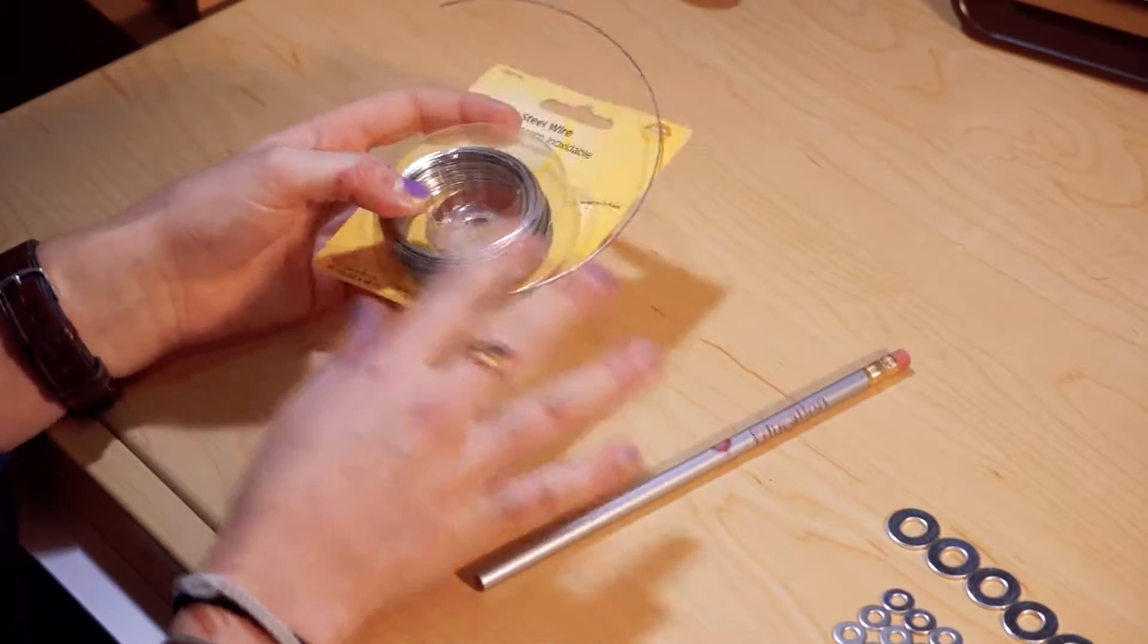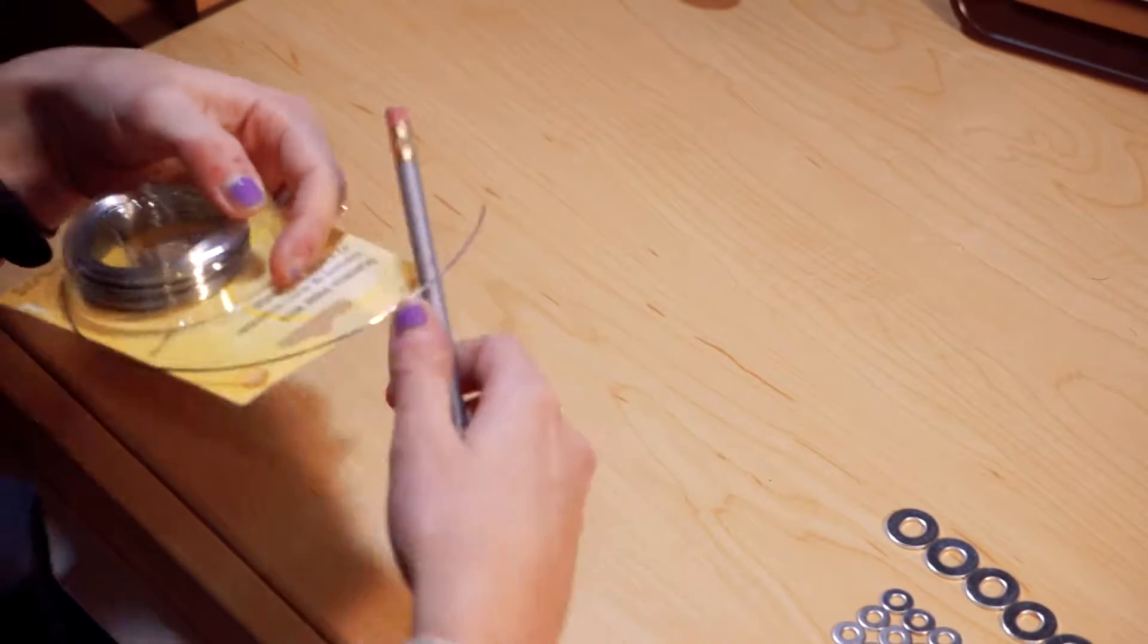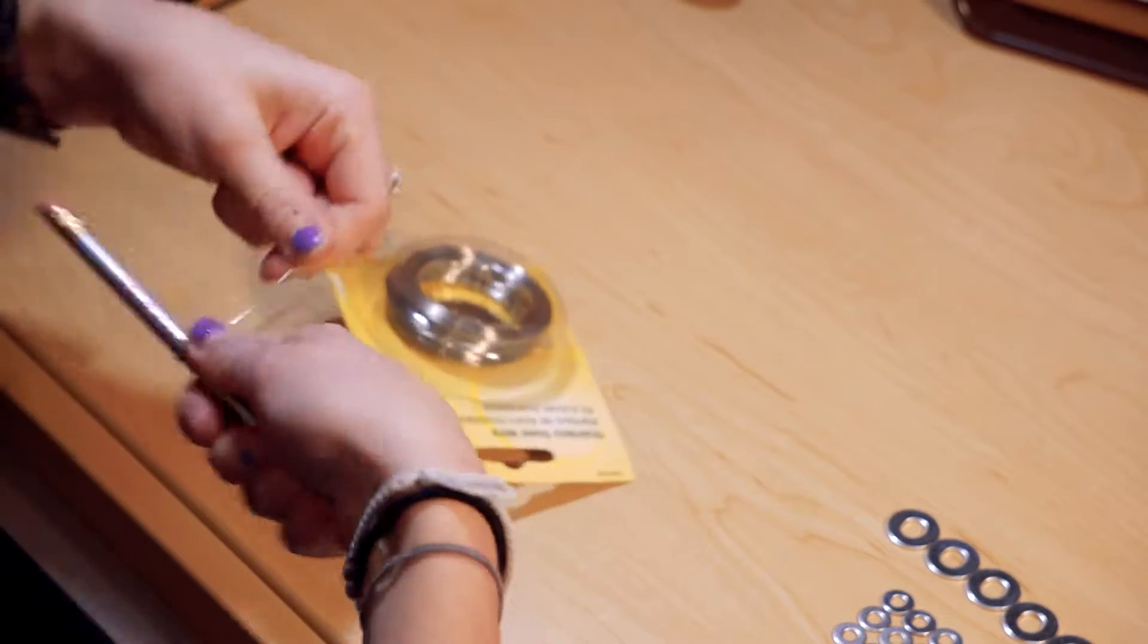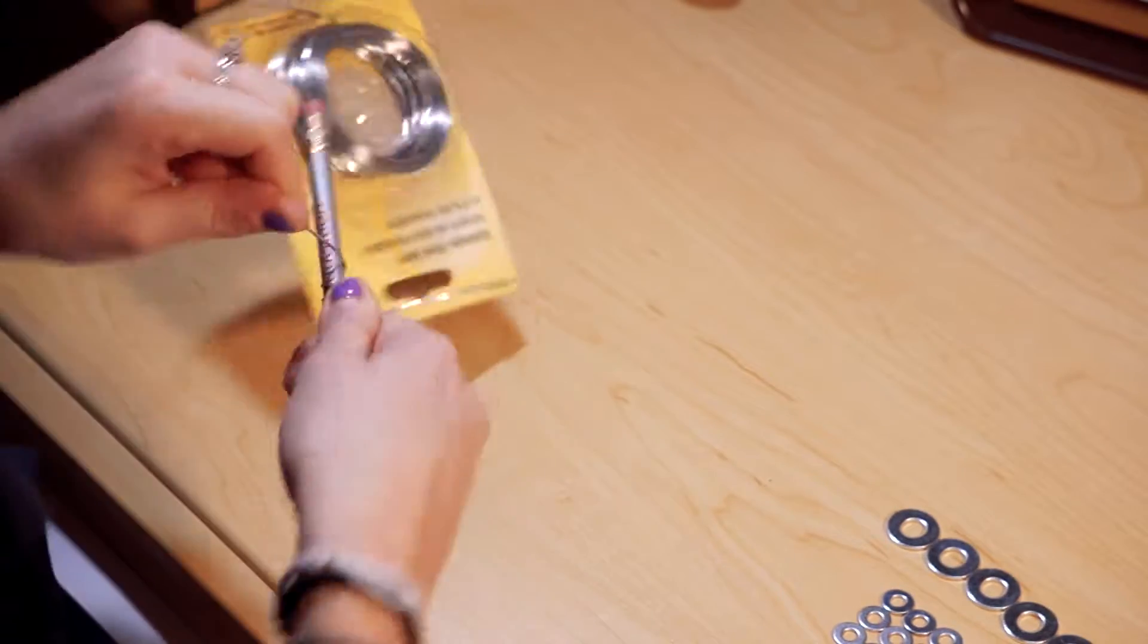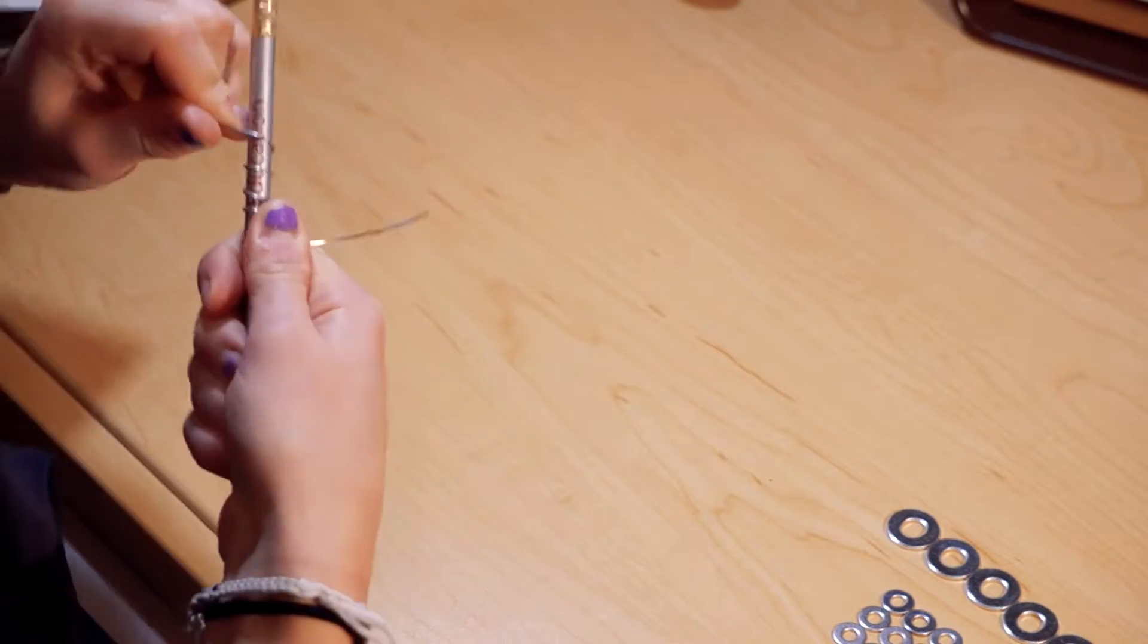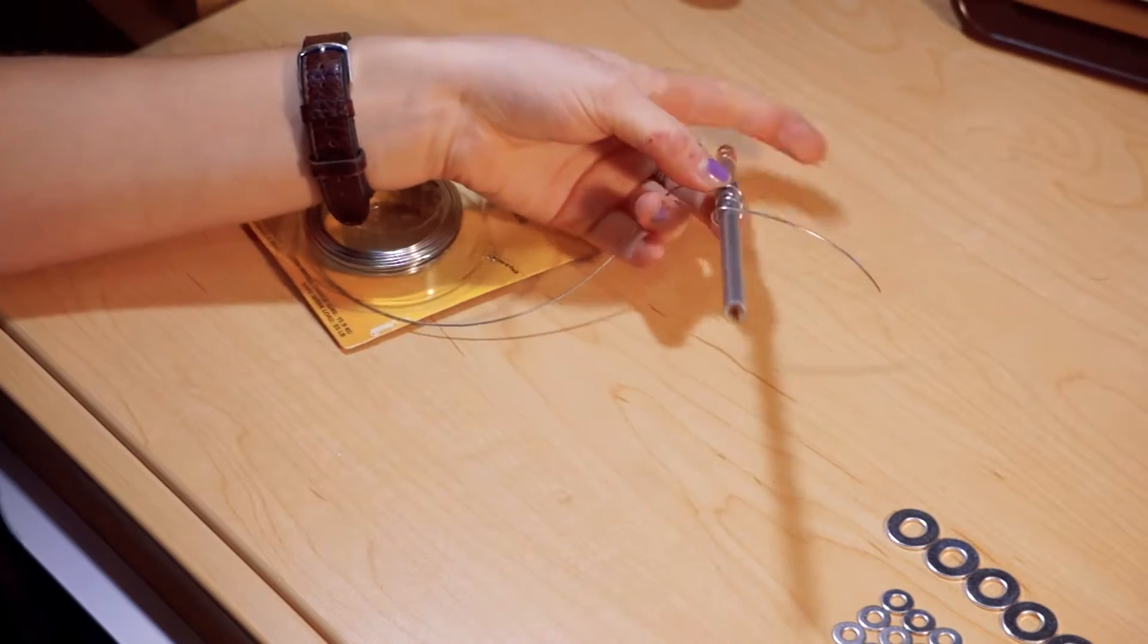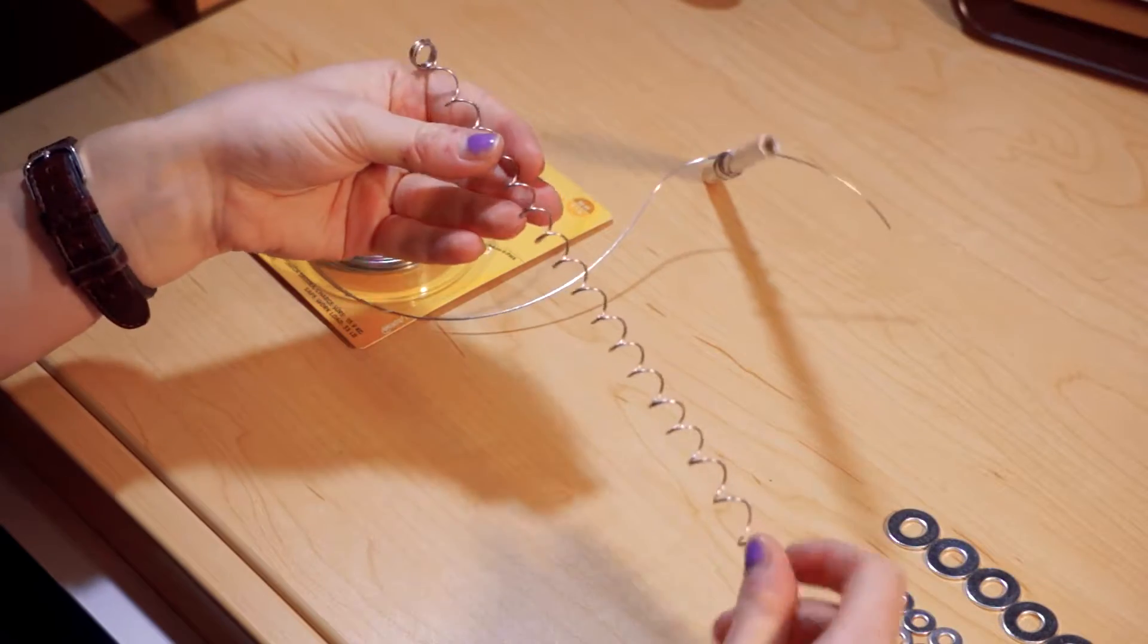First things first, you're going to take your wire and your pencil and you're going to start to wrap it. You're going to want it tight at first because we'll pull it out later so that it's even, but it's going to look like this. And then ultimately when you're done, you're going to have something that looks like this.